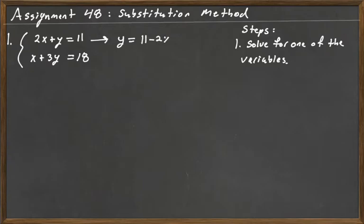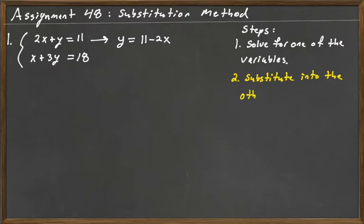So y is equal to 11 minus 2x — doesn't matter if I said negative 2x plus 11. Step two, we're going to substitute into the other equation, the one that we didn't use. So we have x plus 3, and then y — well, we solved for y, it's 11 minus 2x, and that's going to be equal to 18.